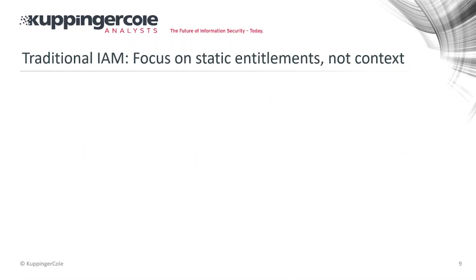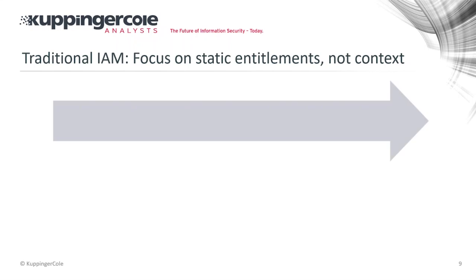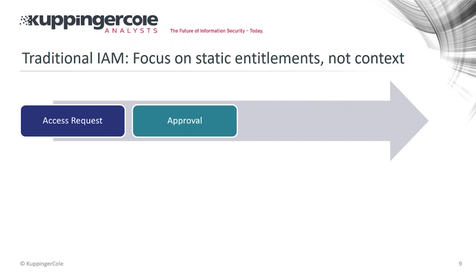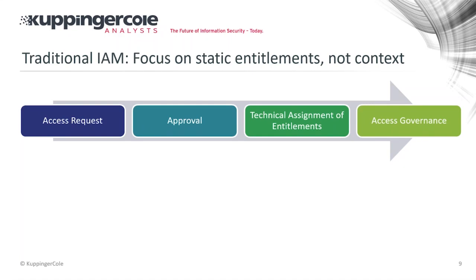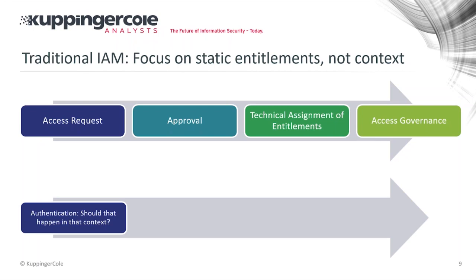Traditional identity access management and identity and access governance focuses on static entitlements — it's not focused on context, behavior, or what is happening. We have an access request, an approval in the workflow, technical provisioning, and governance to check if static entitlements are still correct. But we don't understand who the user is, whether they're the person they should be, which context they're operating from, which country, which system. Authentication and authorization are based on static entitlements without runtime context.